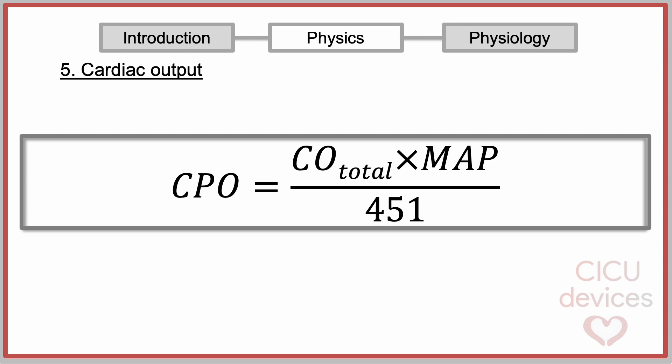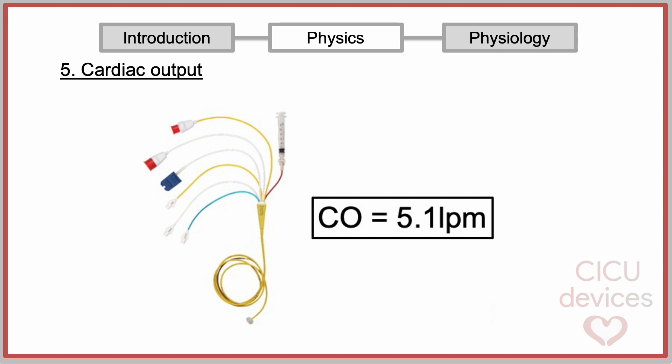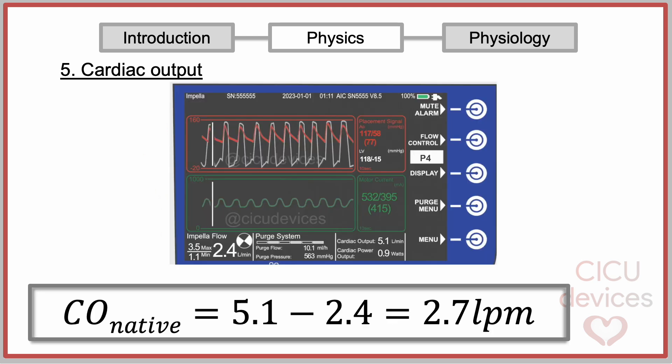Additionally, with total cardiac output, the system will calculate cardiac power output. For example, we start by measuring cardiac output with a catheter and entering the data into the console. Once the data is entered, the system will calculate the native cardiac output by subtracting the Impella flow from the total cardiac output.